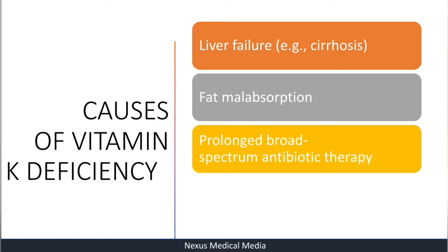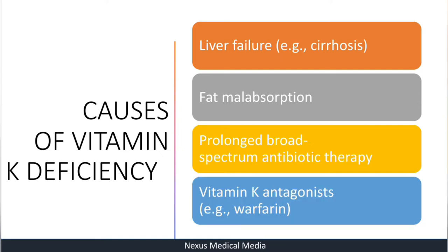Number three is prolonged broad-spectrum antibiotic therapy. Because small amounts of Vitamin K are synthesized by the intestinal flora, prolonged antibiotics kill off this normal flora, leading to Vitamin K deficiency. Number four is Vitamin K antagonists — in particular, warfarin. So to summarize: liver failure, fat malabsorption, prolonged broad-spectrum antibiotics, and Vitamin K antagonists.